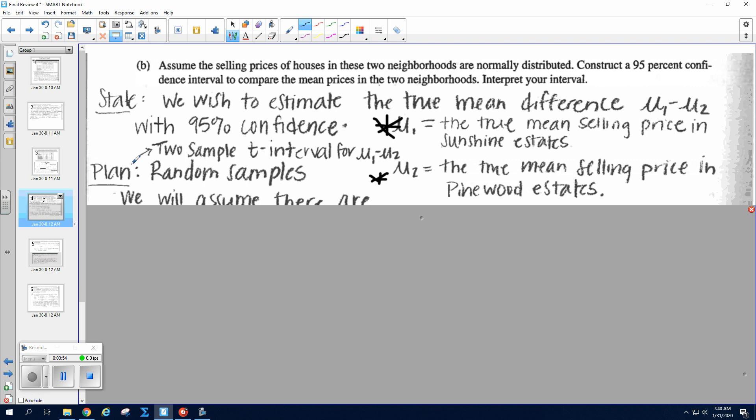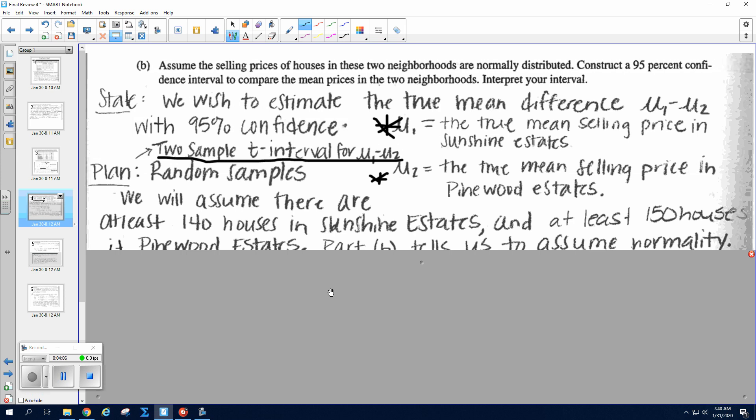All right, the name of the test is a two-sample t-interval for μ₁ minus μ₂. And then they're both random samples, so we have to check our conditions. They're both random samples. You got to check 10% for both, so we'll assume there are at least 140 houses in the Sunshine Estates subdivision and at least 150 houses in the Pinewood Estates subdivision.